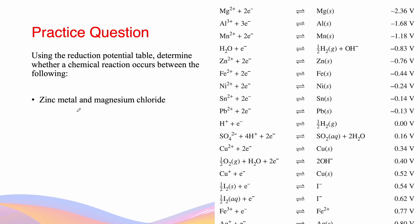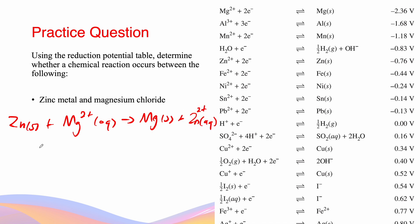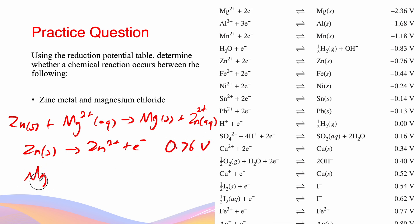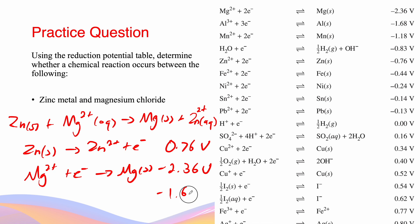The reaction between zinc metal and magnesium chloride will lead to the oxidation of zinc and the reduction of magnesium. The oxidation of zinc metal has a potential which is the negative of −0.76 V, giving +0.76 V. The reduction of magnesium is −2.36 V. If we add these values together, we end up getting −1.60 V. Because the total electrical potential is negative, this reaction will not occur spontaneously.